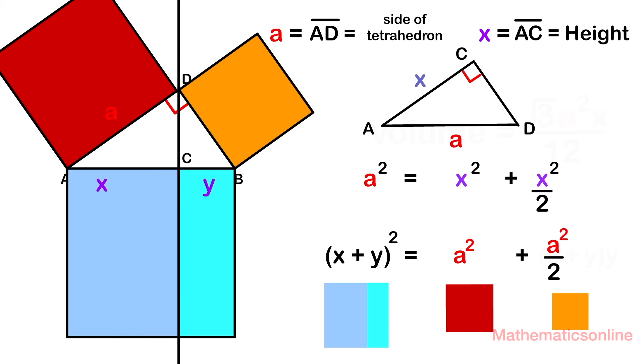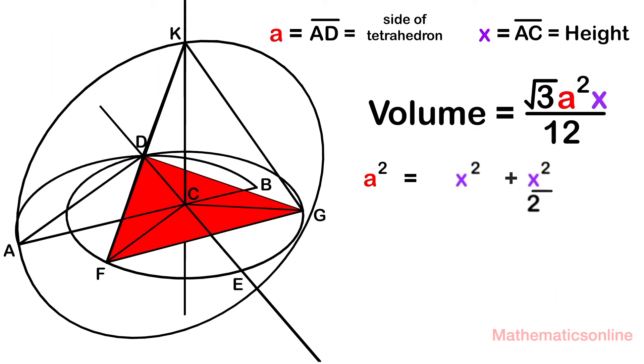Let's go ahead and simplify and solve for x. And so we have x is equal to a times the square root of 2 divided by the square root of 3.